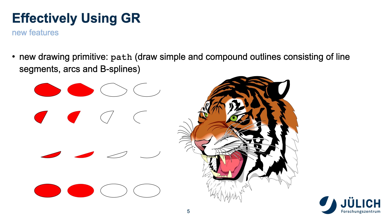There are also useful applications, for example the Julia logo in the GR example directory, consisting of paths and circles.